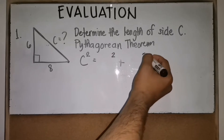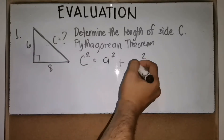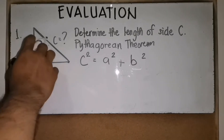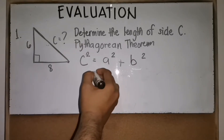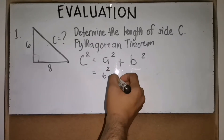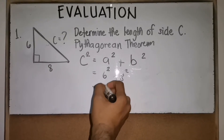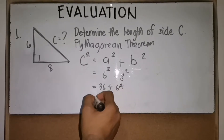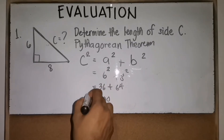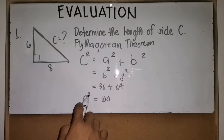We label the legs as a and b. Using the formula c² = a² + b², a is 6 so a² is 36, and b is 8 so b² is 64. Therefore c² = 36 + 64 = 100.